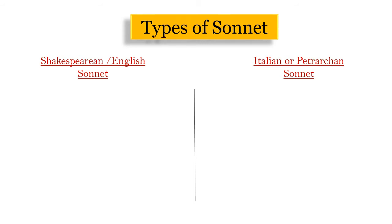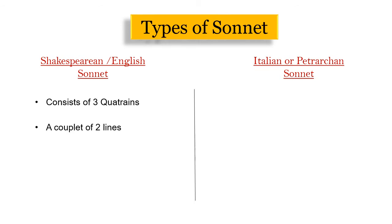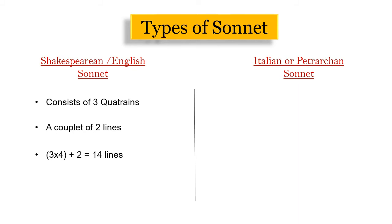In the Shakespearean sonnet there are three quatrains, which means 4 lines each, and after that two lines called a couplet. In the three quatrains, the subject presents problems or questions, and the couplet at the end provides the answers or resolution.